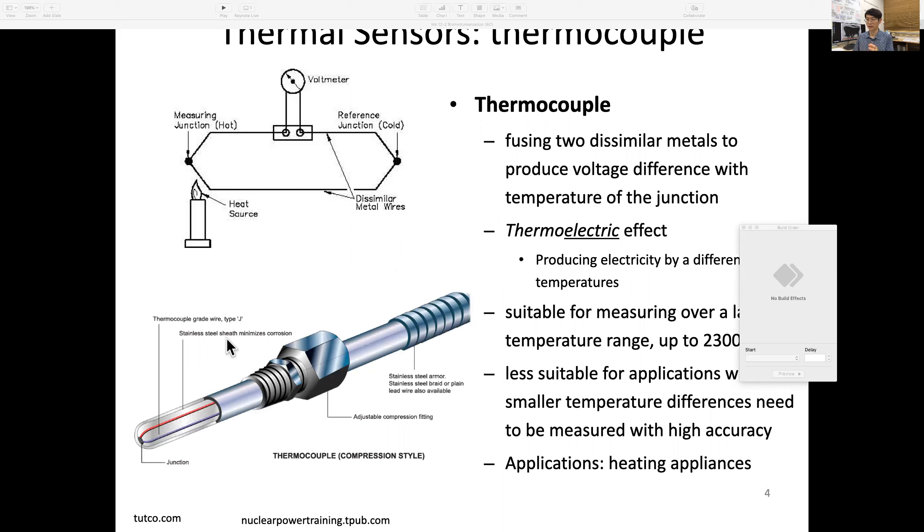This is shielding with stainless steel. You can see the red and blue metal wires with a junction—that's the sensing point. This one is suitable for measuring over large temperature differences, such as up to several thousand degrees.